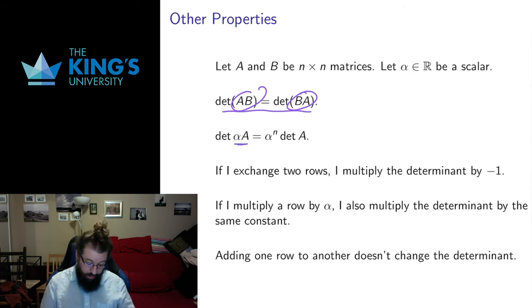If we multiply everything in a matrix by a constant, the effect is alpha to the n times the determinant. So n being the size of the matrix.